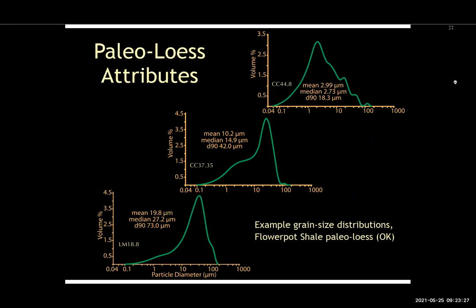Here are some grain size analyses. We're able to disaggregate these in many cases in Oklahoma because the Permian of Oklahoma has never been very deeply buried. We run it through a protocol to successfully disaggregate it and run it through a laser particle size analyzer. On the lower left is a really classic loess pattern with a median size of 27.2 microns, going up to something that's really clay — around three or four microns in the upper right. That happens to be from a unit called the Flowerpot Shale of Oklahoma.